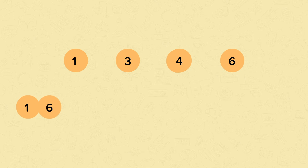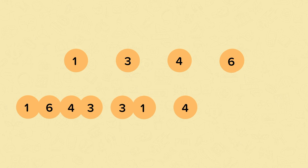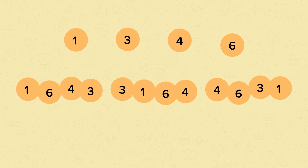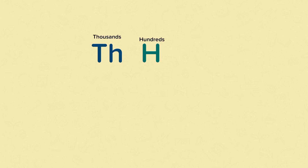Let's look at these four digits. These four digits can be arranged in many different ways to create different four-digit numbers. The value of each digit in the number will depend on whereabouts it is in that number. A four-digit number is made up of thousands, hundreds, tens and ones.